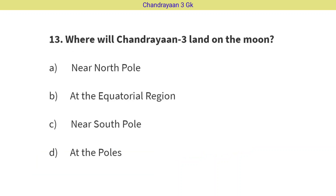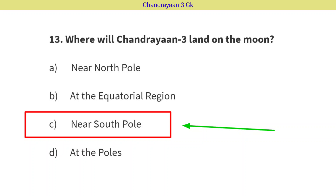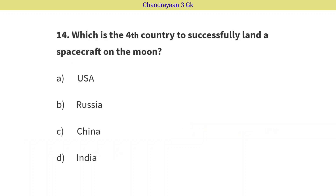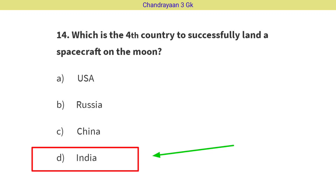Question No. 13: Where will Chandrayaan-3 land on the moon? The correct answer is Option C, i.e. Near South Pole. Question No. 14: Which is the fourth country to successfully land a spacecraft on the moon? The correct answer is Option D, i.e. India.